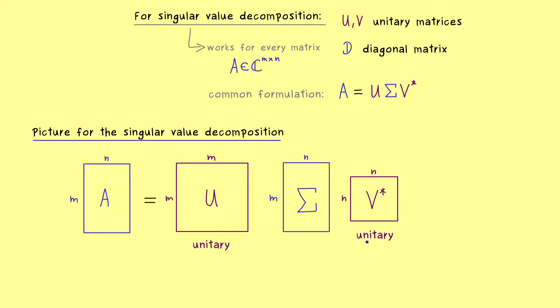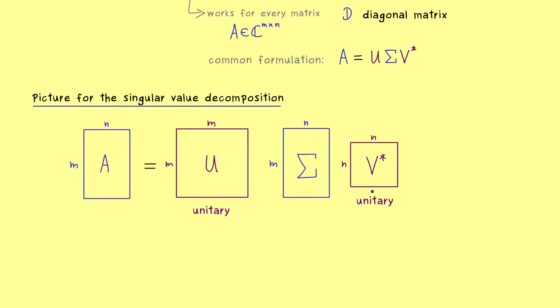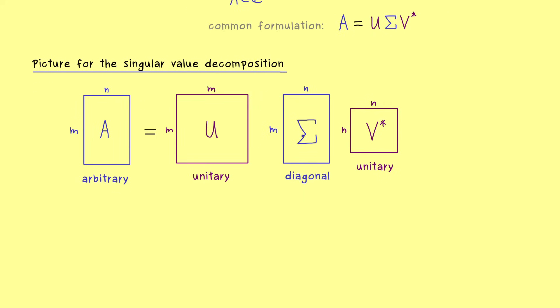However they have something in common, namely they are unitaries, which means inside the columns of each matrix we find an ONB. So for V star we find an ONB of C^n and for U we find an ONB of C^m. So now the claim of the singular value decomposition is any arbitrary A can be diagonalized in this way.